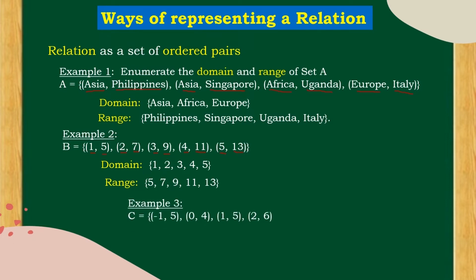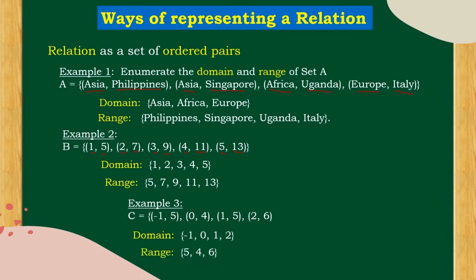Will you please try this one and enumerate the domain and range? The domain is: negative 1, 0, 1, and 2. The range is: 5, 4, and 6.